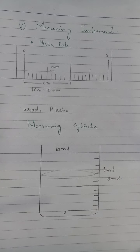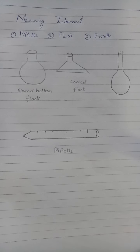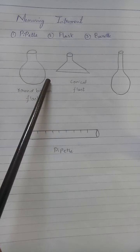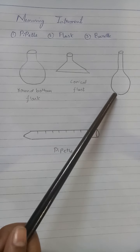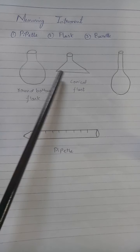Today we will study the third measuring instrument — flask and burette. Students, you know how to measure volume using a measuring cylinder. You also have flasks: round bottom flask, conical flask, and volumetric flask. These are all types of flasks. Round bottom flask is round in shape, conical flask is flat, and volumetric flask is long.